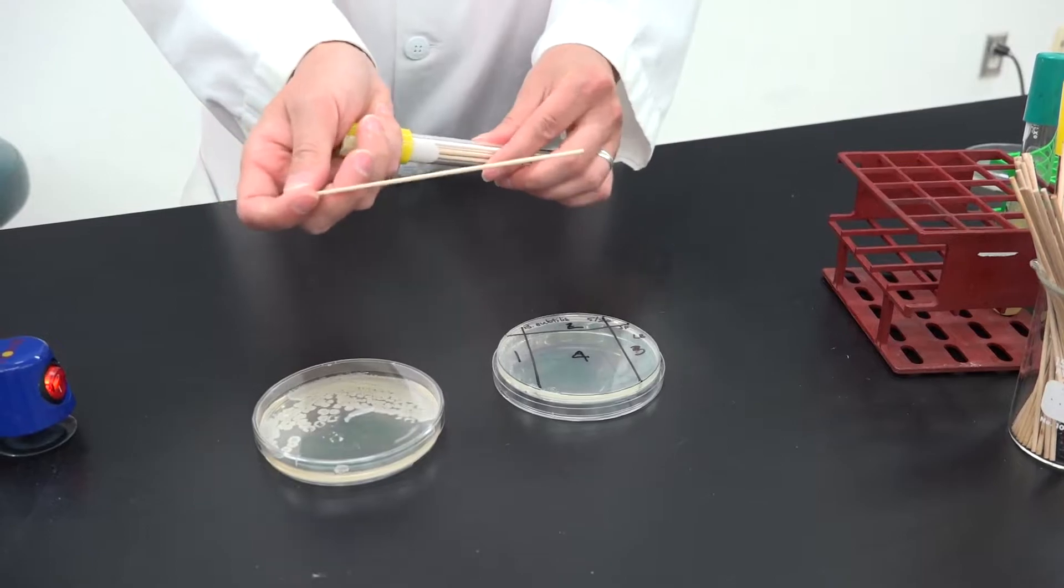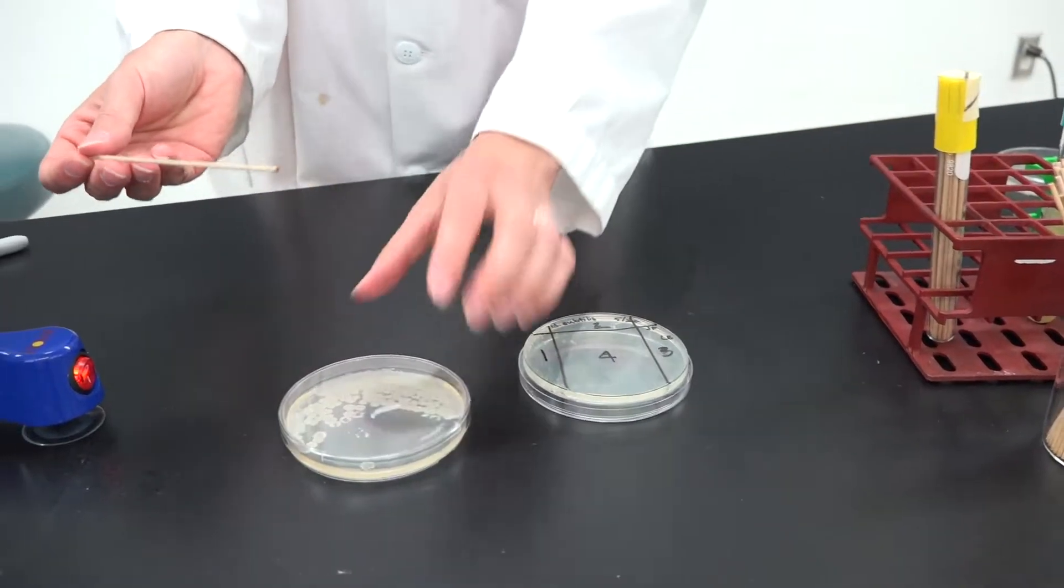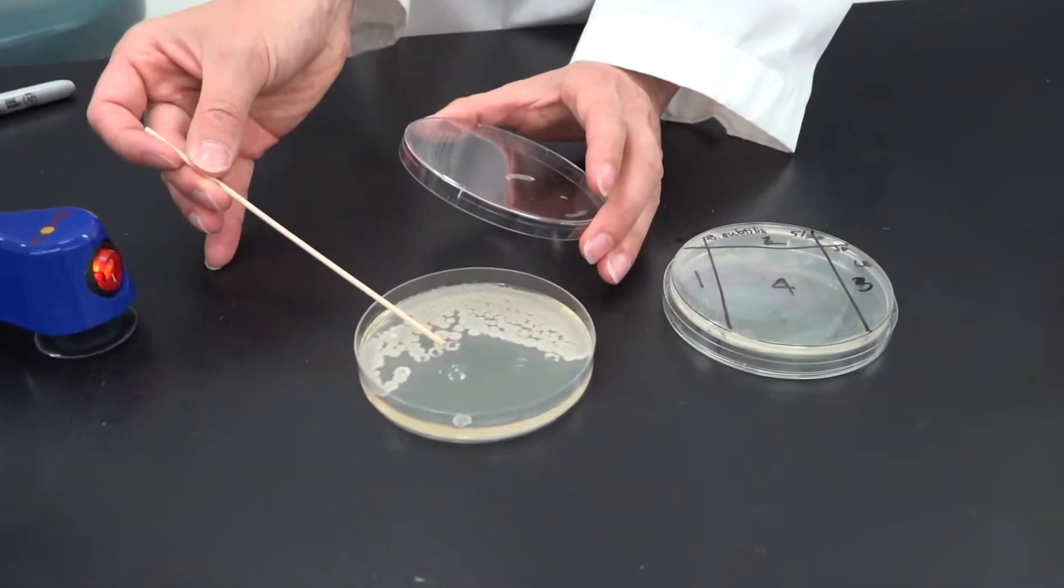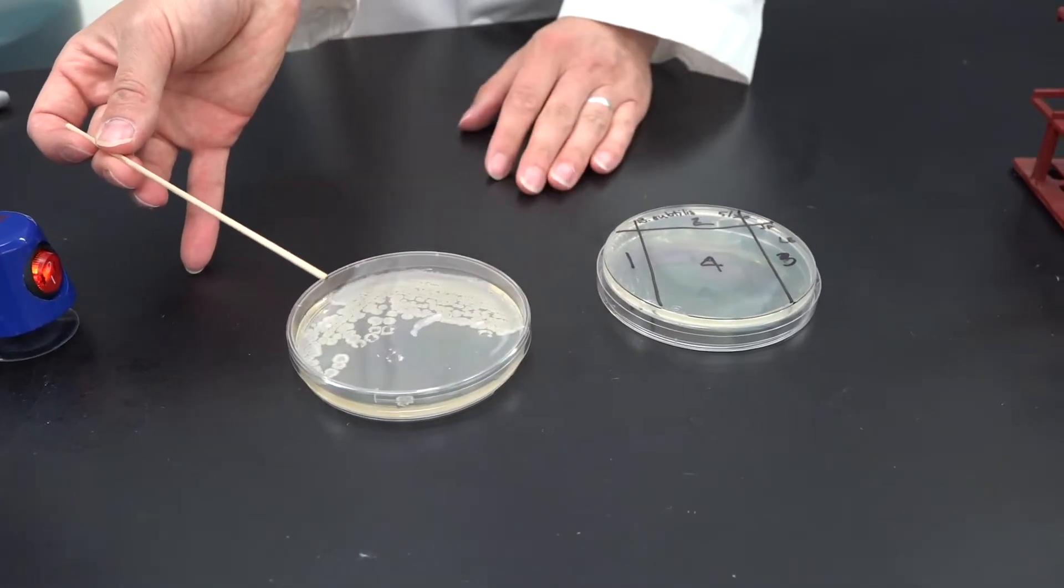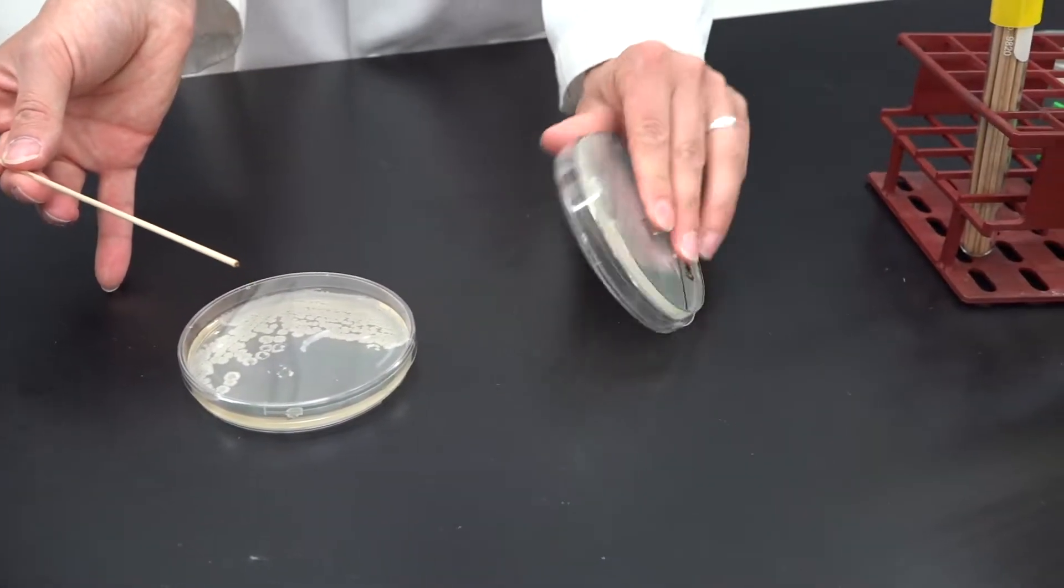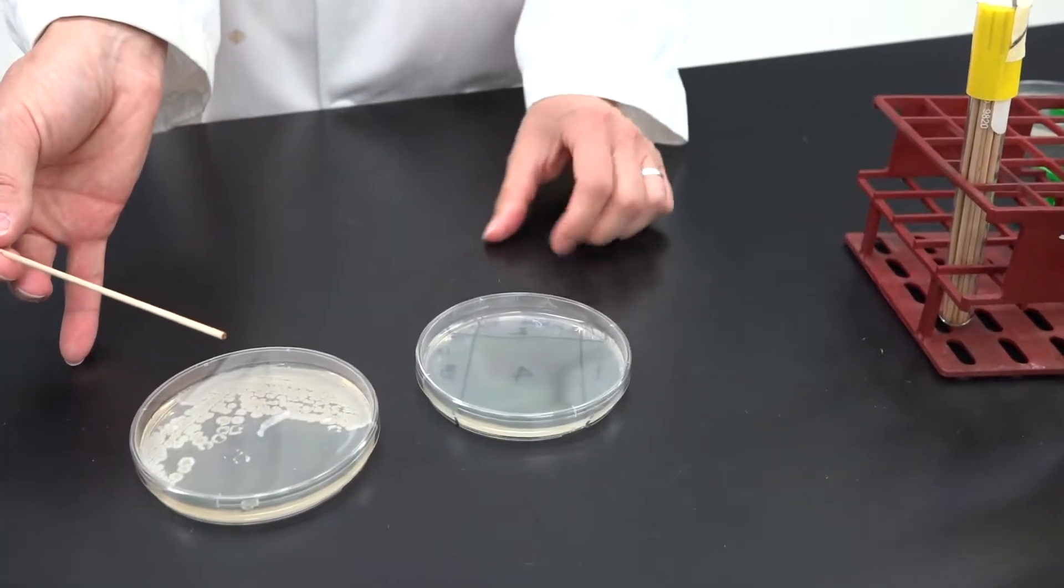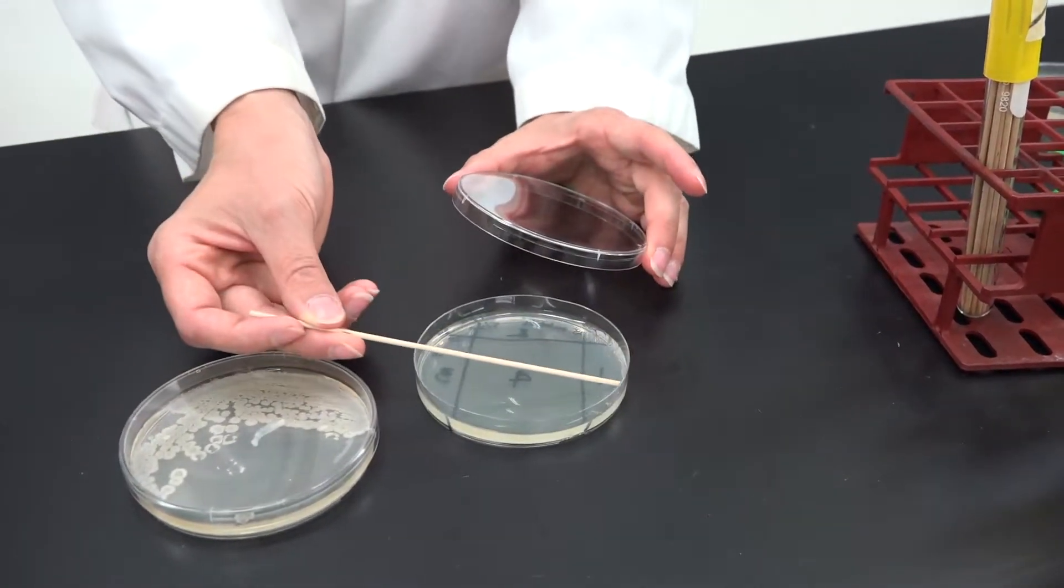Remove a sterile stick from the tube and touch a single colony on the source plate. Turn over the plate that you're going to streak and in quadrant one, spread the bacteria evenly across the entire quadrant.